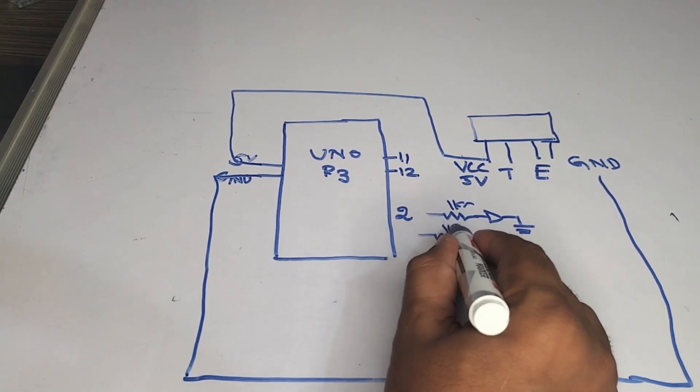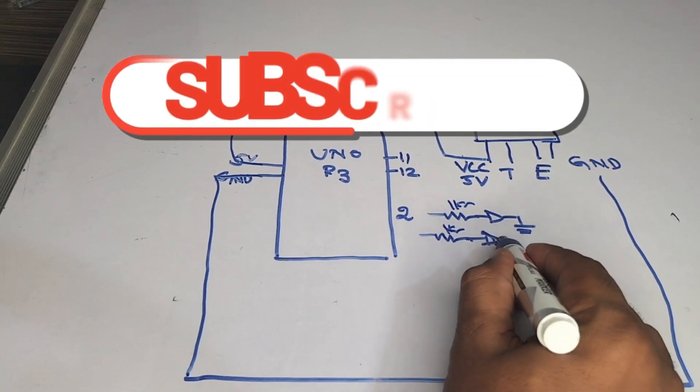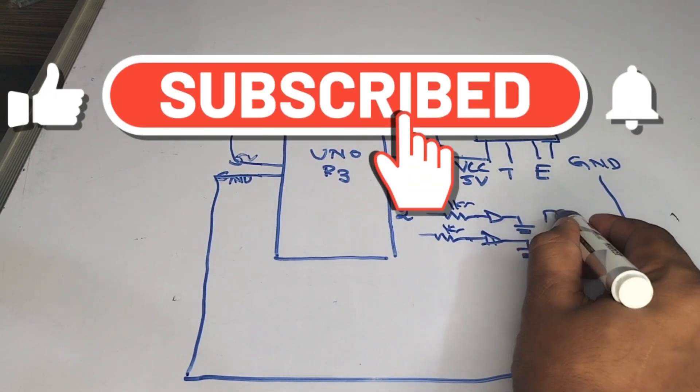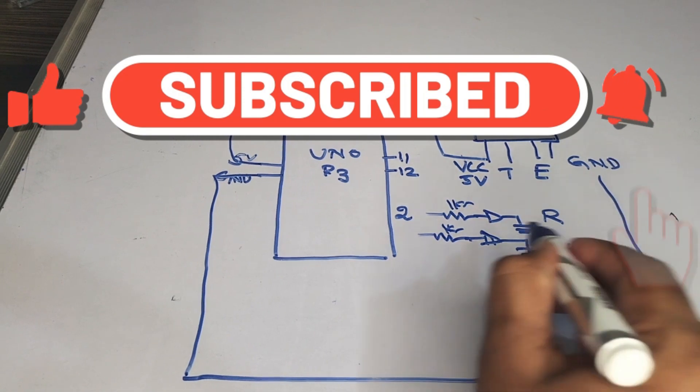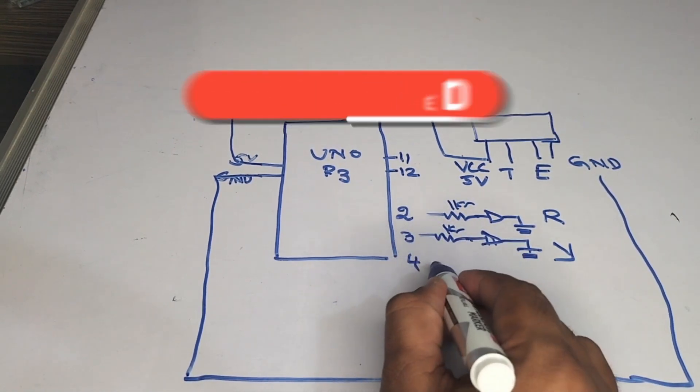And the same 1k resistor. This one will be the red LED, this is the yellow LED, friend. And this is going to the third and the fourth.